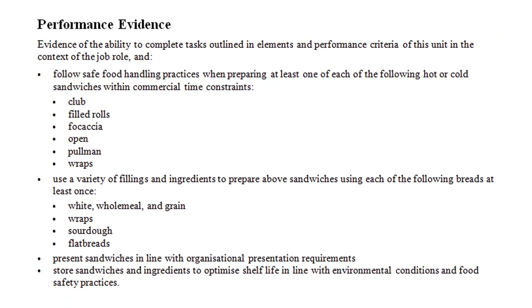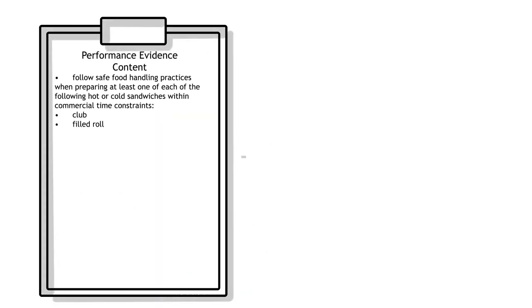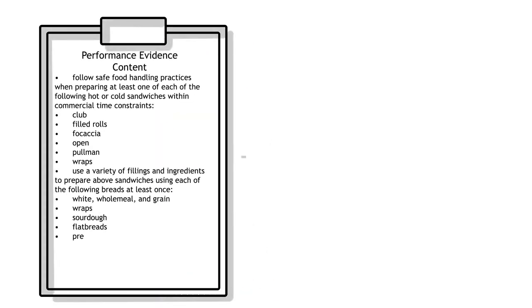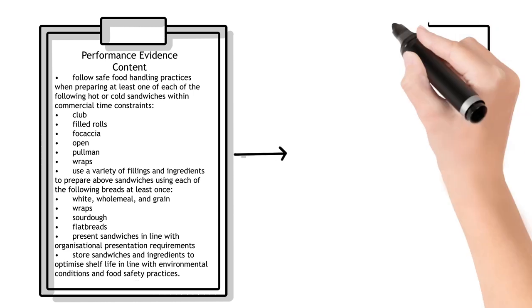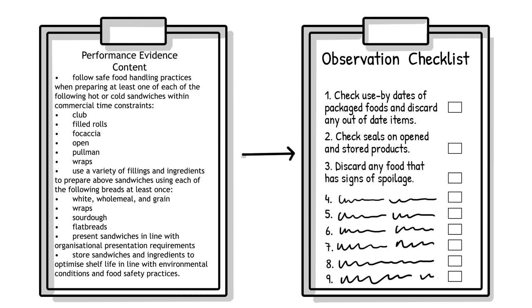Performance evidence outlines the skills, tasks and roles that need to be demonstrated. There will be an alignment between the performance evidence and the skills you have unpacked from the performance criteria earlier in the unit. Information in the performance evidence should be clearly reflected in the observation checklist.